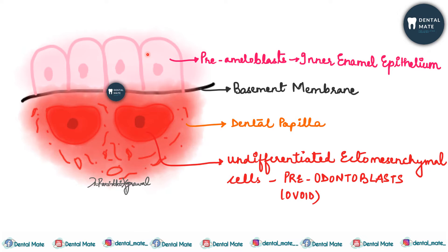The pre-ameloblasts secrete dentinogenesis factors such as TGF-β, IGF, and BMP, which are present in the inner enamel epithelium cells. These factors are released and taken up by the pre-odontoblasts, which are the undifferentiated ectomesenchymal cells of the dental papilla.